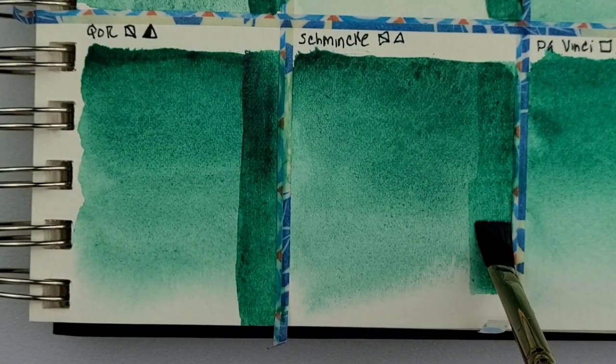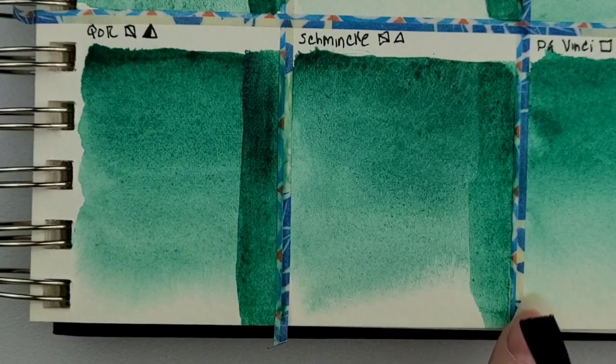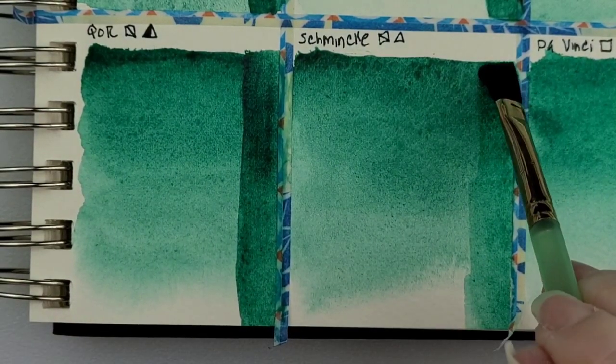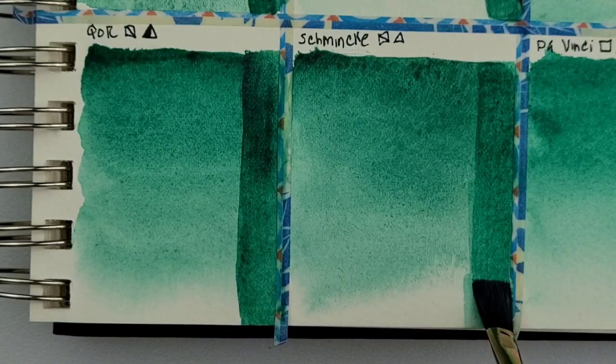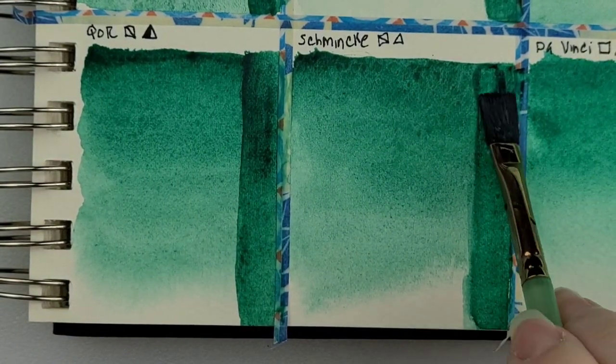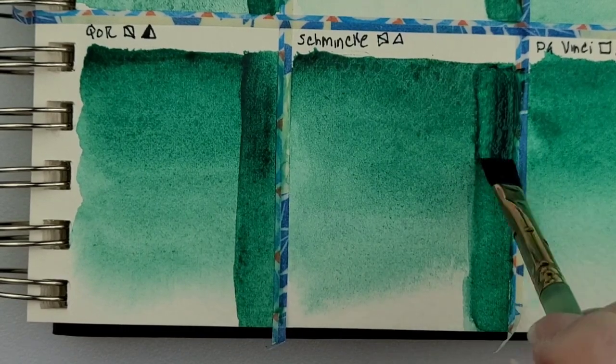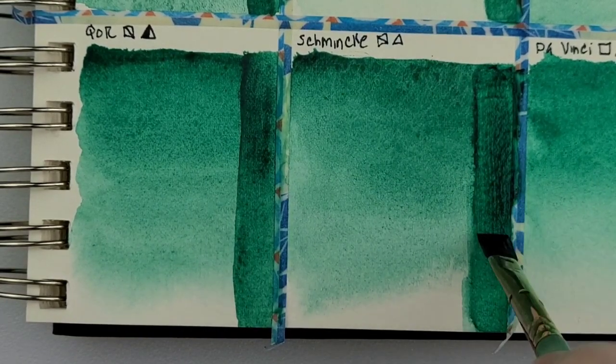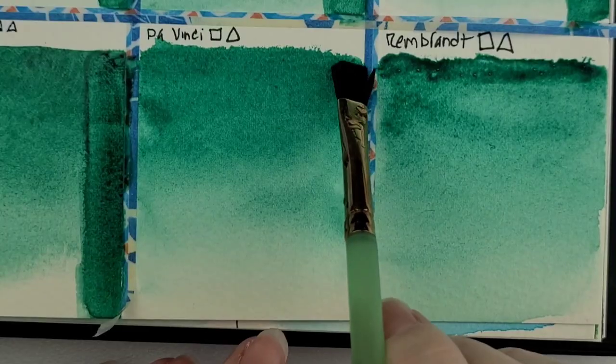And Schmincke, like I mentioned, I had to go back to the tube. It had a little bit too much of a binder issue. Which surprised me because of all the super granulating colors. But people have mentioned on some of them, a little bit of shine and mass tone.